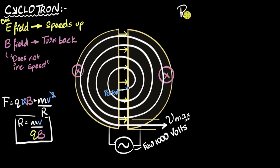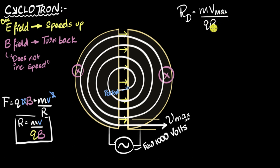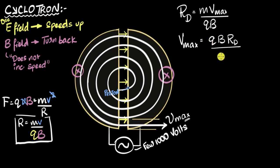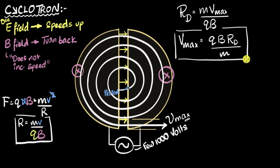So for R, I substitute the radius of the D. That means M times V_max equals QB·R_D, and rearranging, I get the maximum speed to be QB·R_D divided by M. Now let's look at this and see if it makes sense.